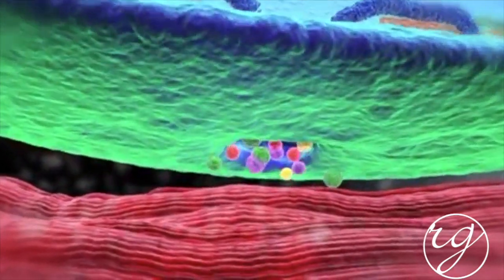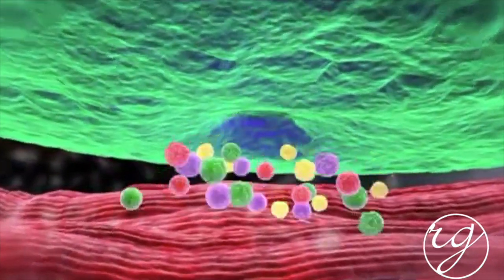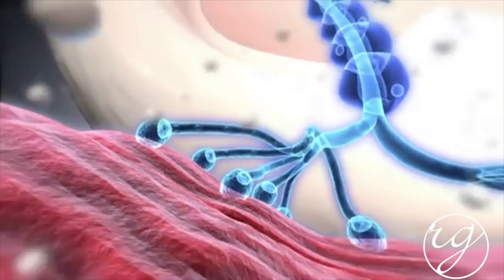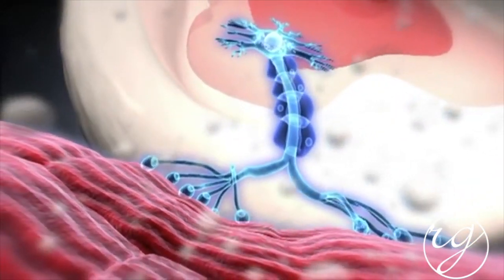The acetylcholine diffuses and eventually binds to receptors on the muscle, leading to muscle contraction.